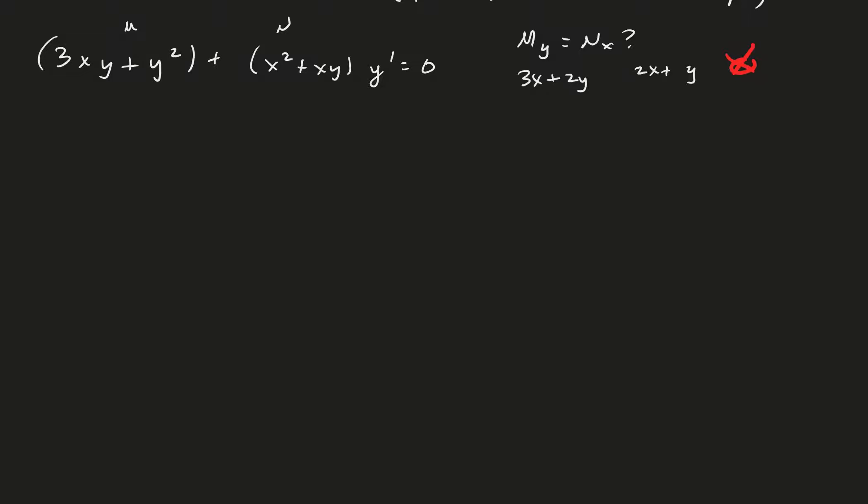Okay, so now the question, is there a mu so that mu times M plus mu times N y prime equals zero is exact? And so in this case I would tell you try mu as a function of x alone. And the reason I would tell you what the integrating factor might be is because otherwise it would just take you way too long to try to check all the different cases that may be there.